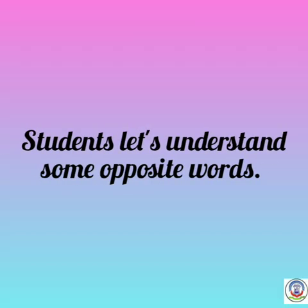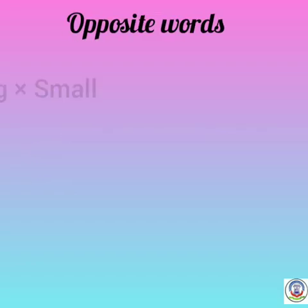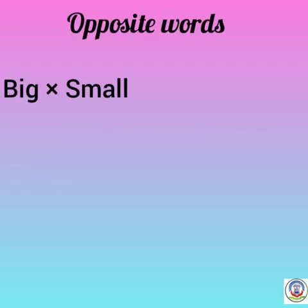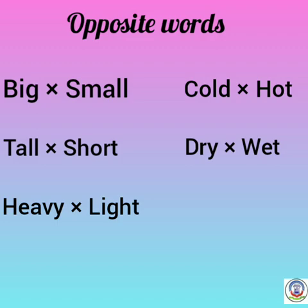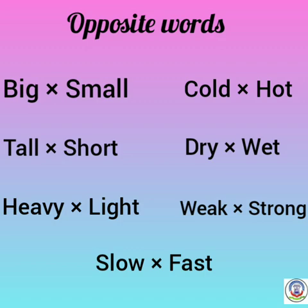Students, let's understand some opposite words: big–small (bada–chota), tall–short (lamba–chota), heavy–light (bhaari–halka), cold–hot (thanda–garam), dry–wet (sukhha–geela), weak–strong (kamjor–taakatwar), slow–fast (dheere–jaldi).